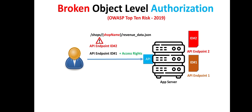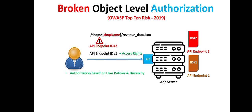In order to implement access rights, authorization should be based upon user policies and user hierarchy. Furthermore, API endpoint IDs should be random and not sequential, so they cannot be guessed by a malicious user. Finally, we have to validate the authorization mechanism by testing the API security.